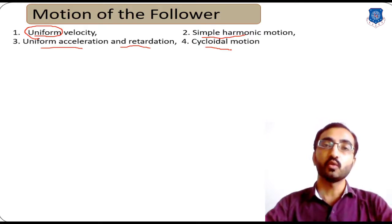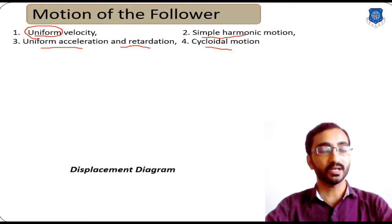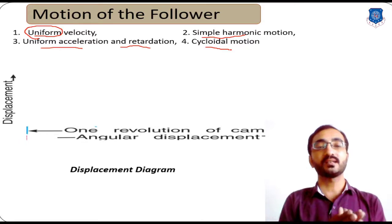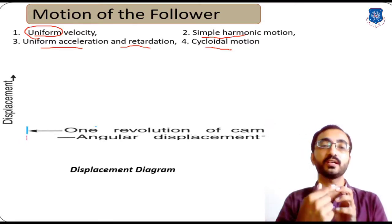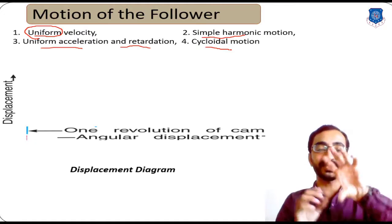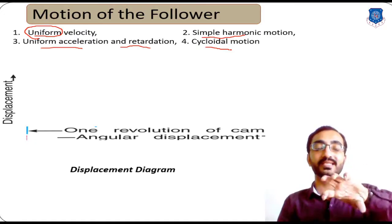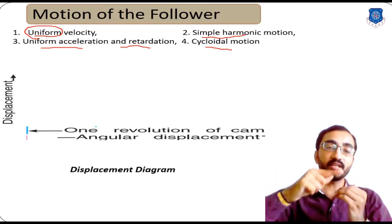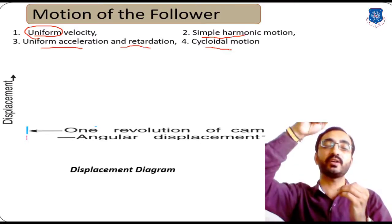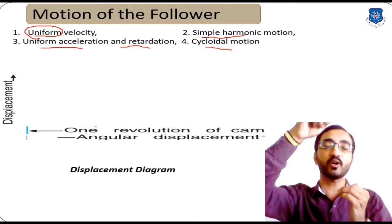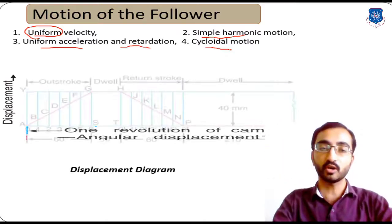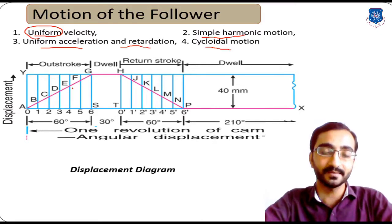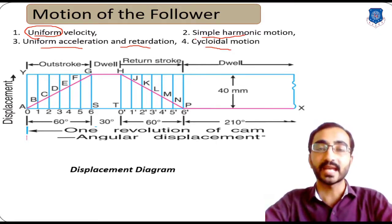According to this motion, we have to plot a displacement diagram. The displacement diagram is a graph between two terms: the rotation of the cam — if we consider one rotation, that is 360 degrees — and during this one revolution of the cam, how much the follower is moving, either in the upward (rise) direction or the downward (return) direction. We will learn this displacement diagram one by one for each type of motion.